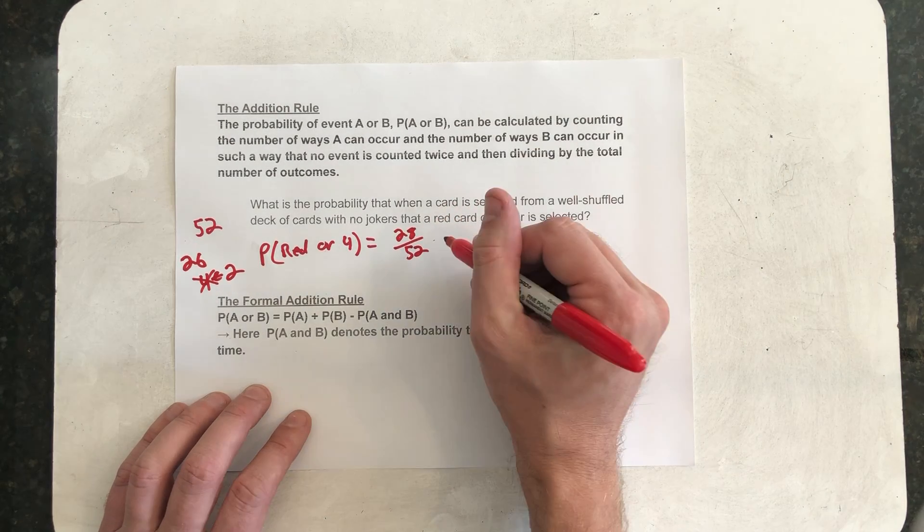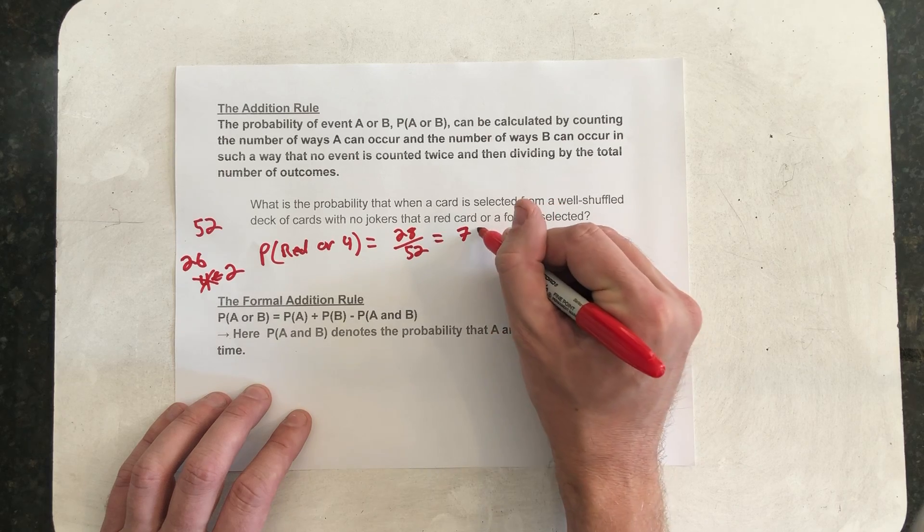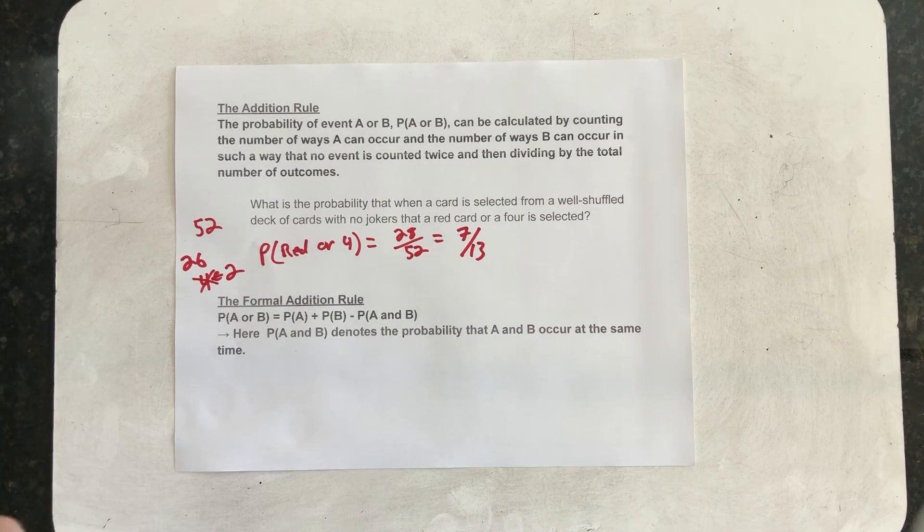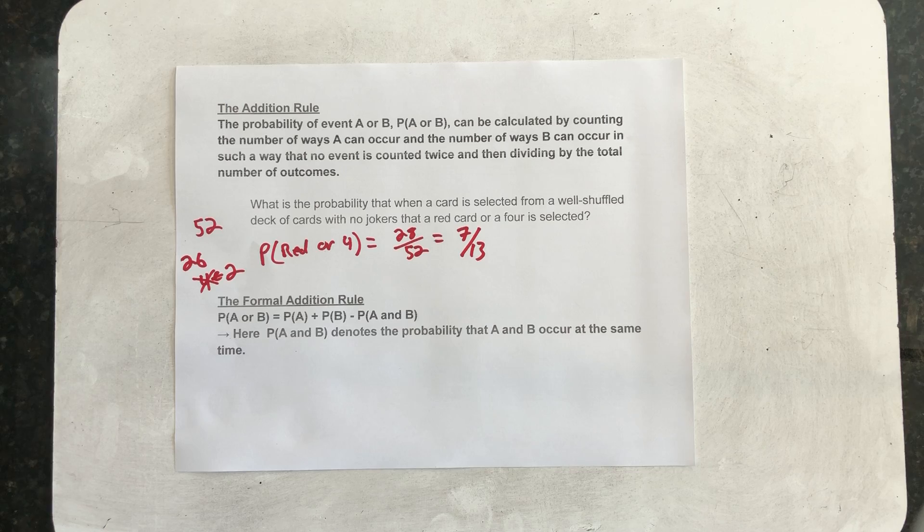Well, we should reduce this fraction to 7 thirteenths. So, there's our probability of selecting a red card or a 4.